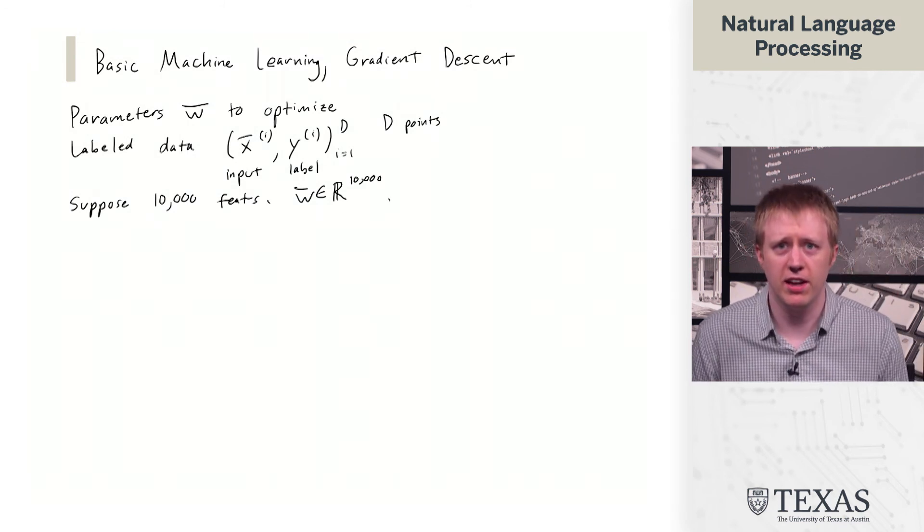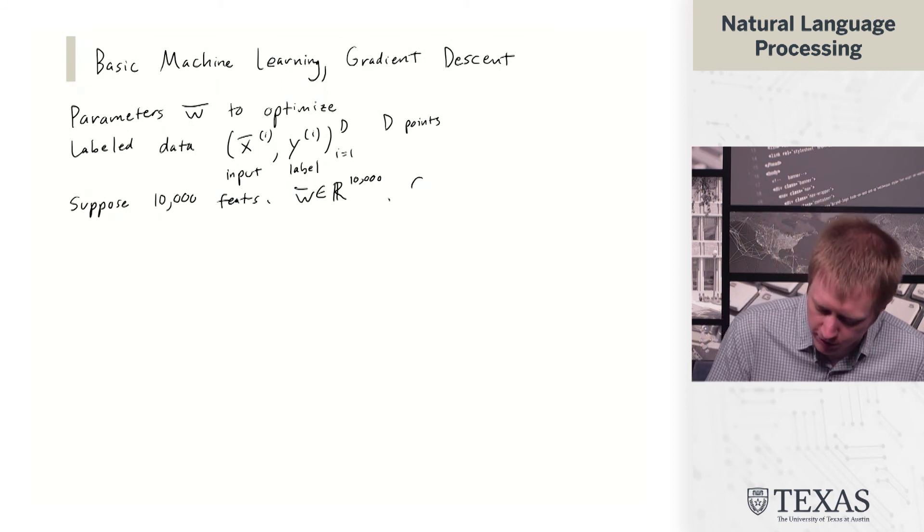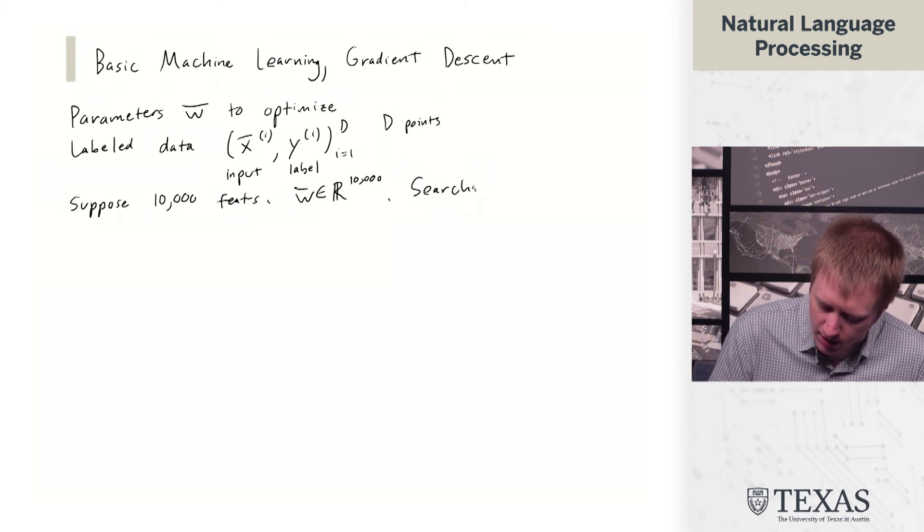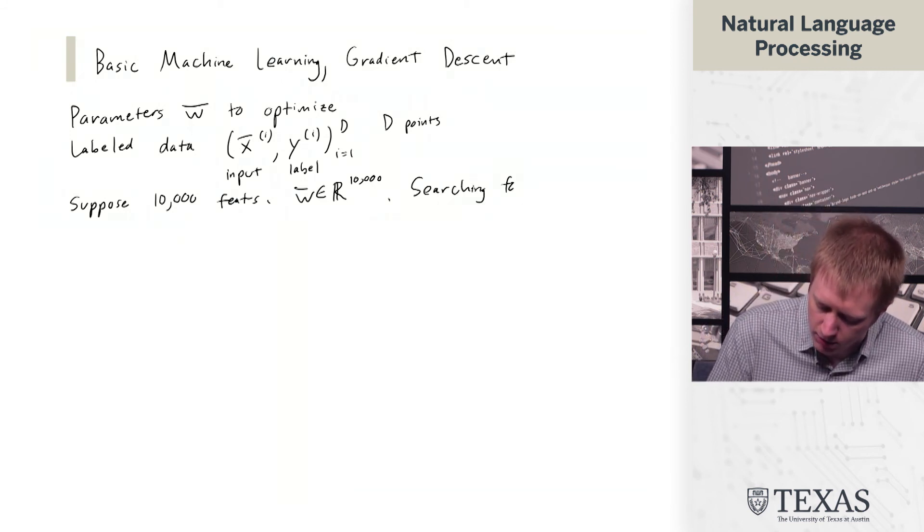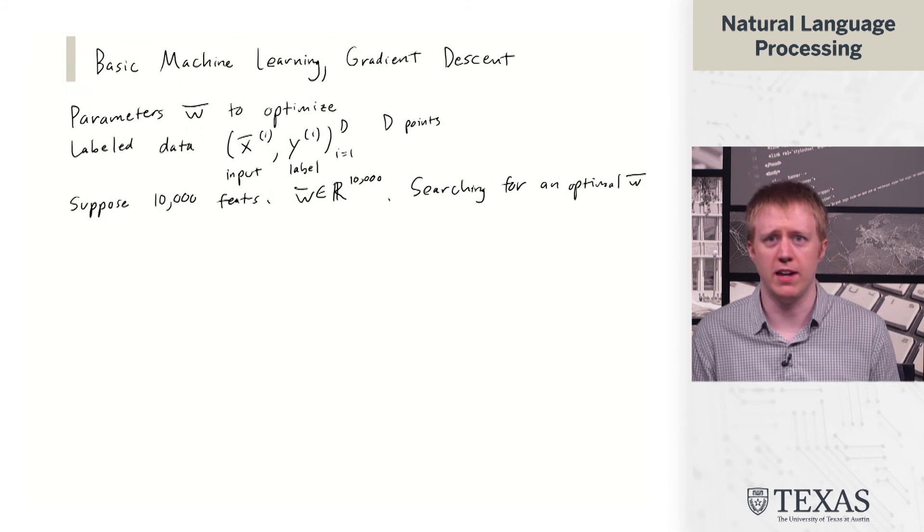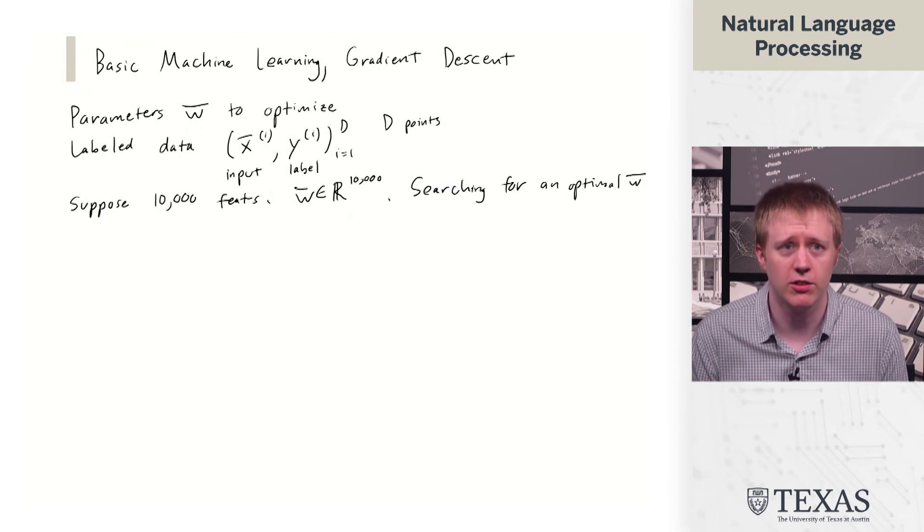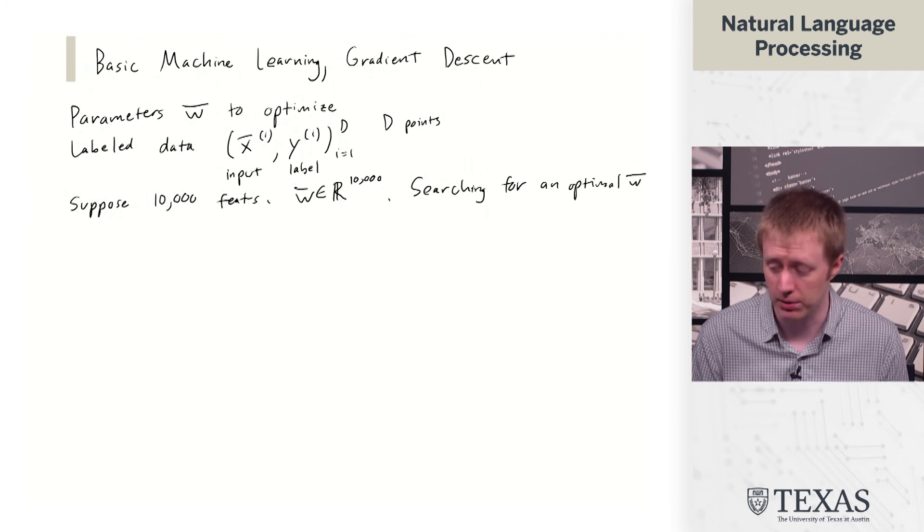And the way we can think about machine learning is we're searching for an optimal W. We want to find a weight vector that is going to allow us to do well at our classification task that we've got.